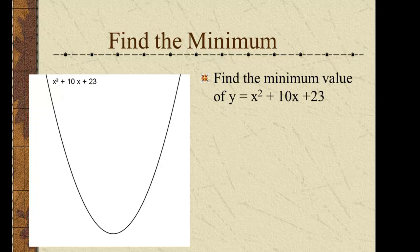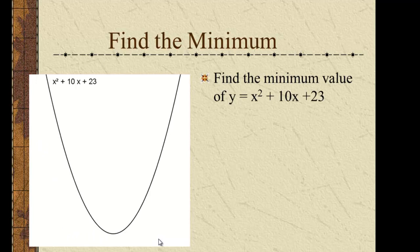The minimum value of this curve is going to be the point where the rate of change is zero at the bottom. All we have to do is graph the function, find the derivative, find out where that derivative is zero.